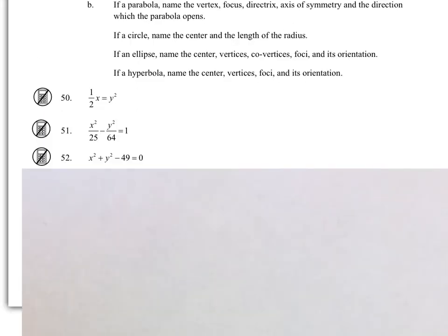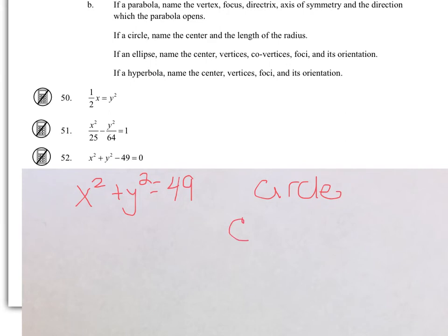For problem 52, moving the 49 to the right-hand side makes this a circle equation. The center is at (0, 0) and the radius is the square root of 49, which is 7.